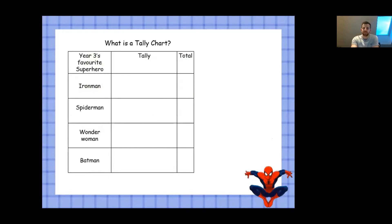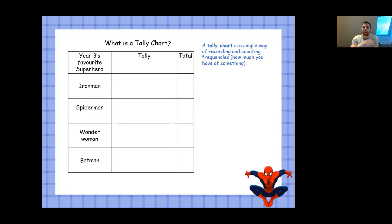So, what is a tally chart? A tally chart is a simple way of recording and counting frequencies — so how much you have of something, or how often something happens.